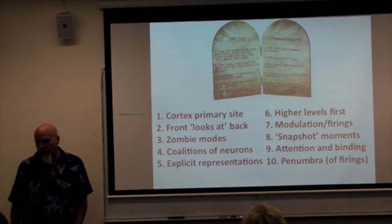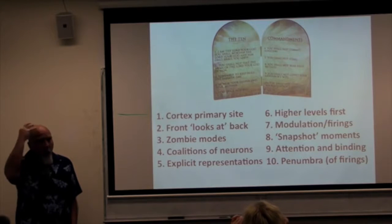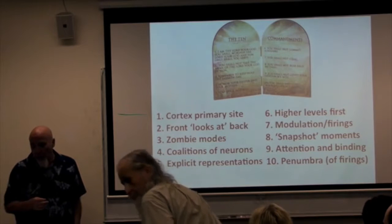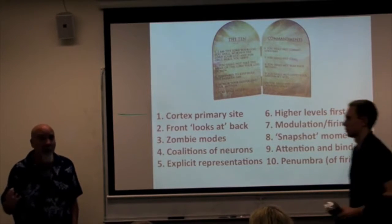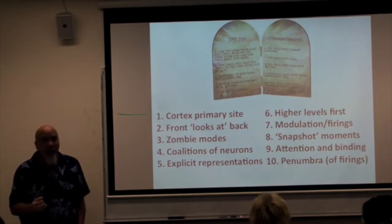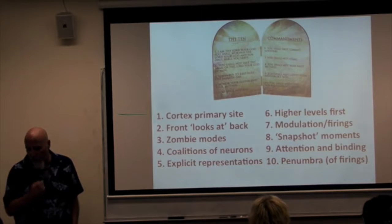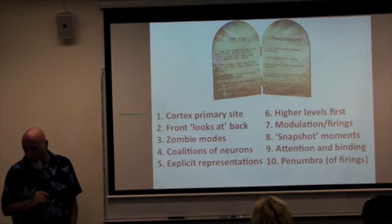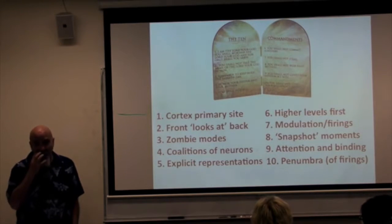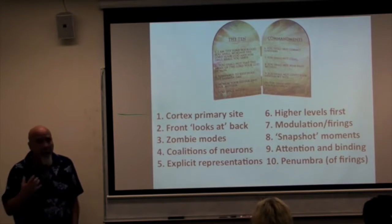They came up with a framework for consciousness and gave ten rules. The major point was that the cortex is the primary site of consciousness, which is probably true. The front of the brain looks at the back of the brain. We have zombie modes of non-conscious autopilot activities. Consciousness involves coalitions or assemblies of neurons. There are explicit representations in V1. Higher levels get activated first, then consciousness happens later. There's modulation of firings, although I don't think firings are what mediate consciousness.